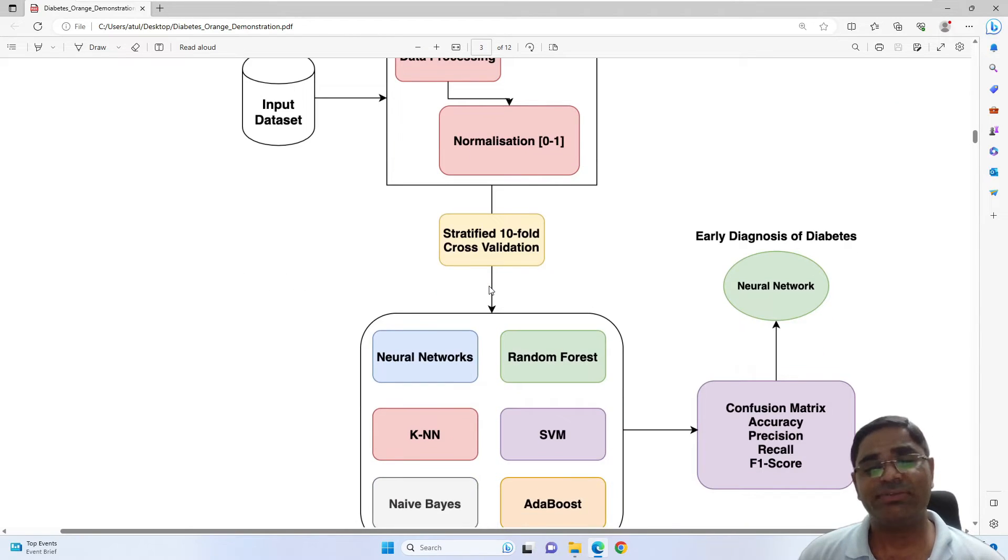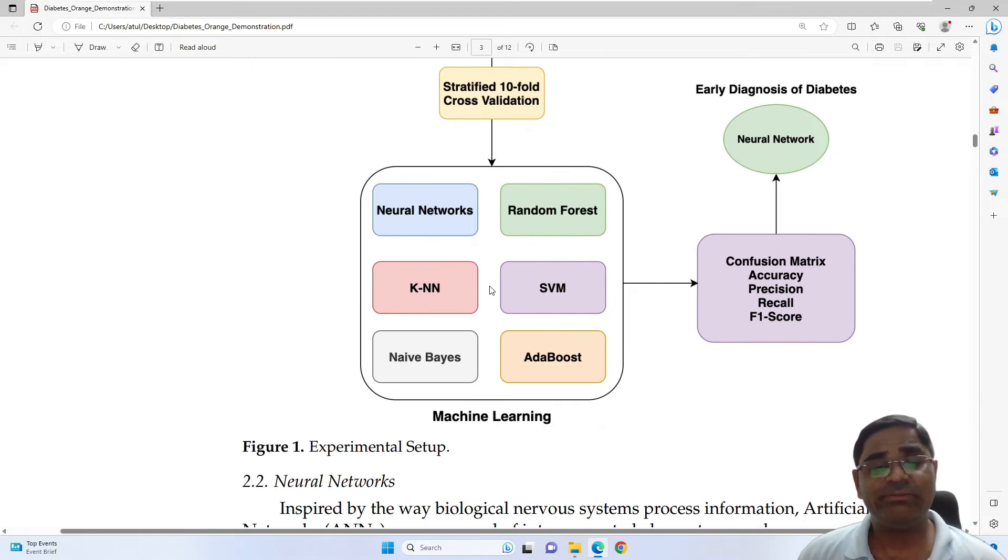Then we use stratified 10-fold cross validation. We will talk about it in detail later on. Then we will use certain machine learning algorithms, namely Neural Network, Random Forest, KNN, SVM, Naive Bayes, and Adaboost.